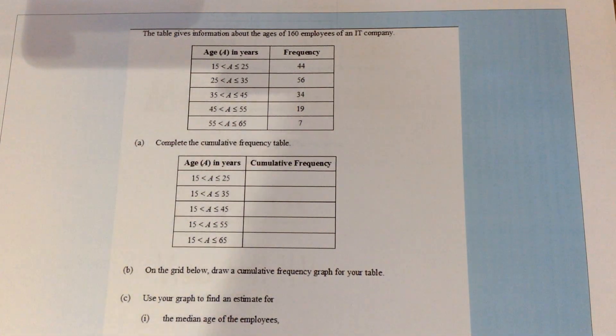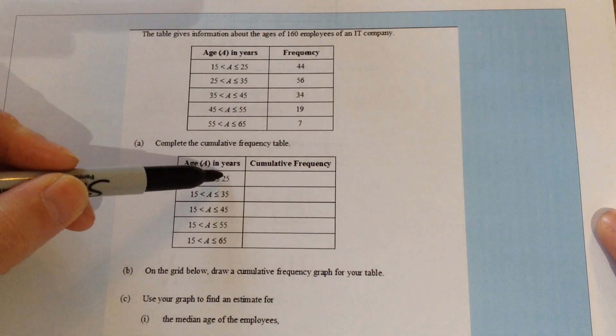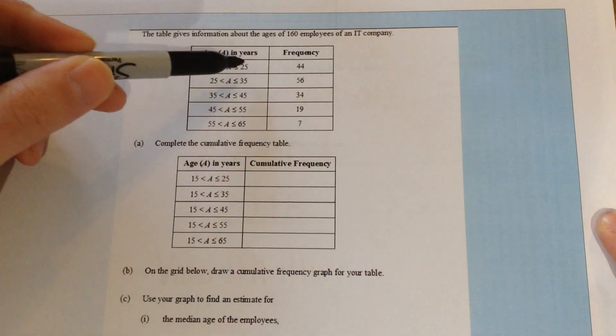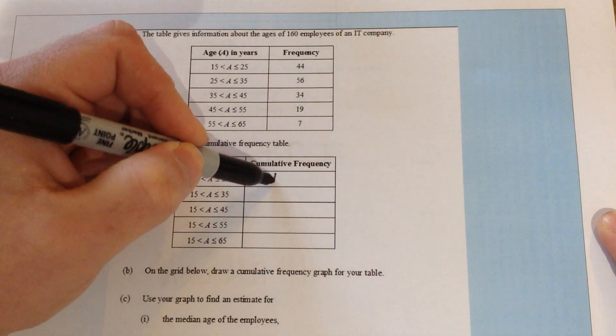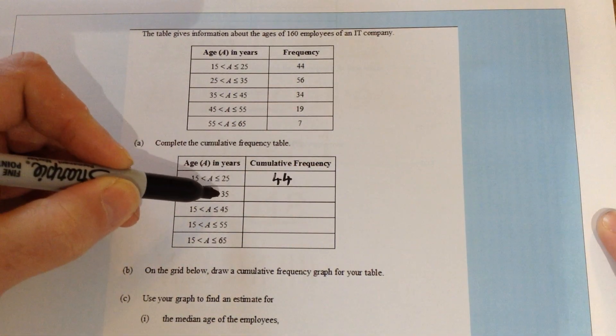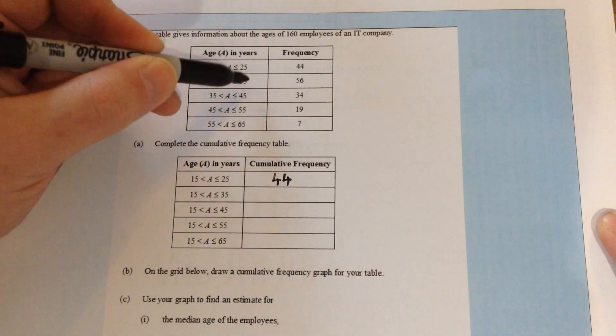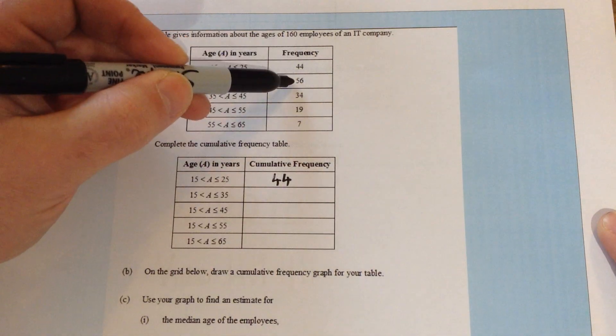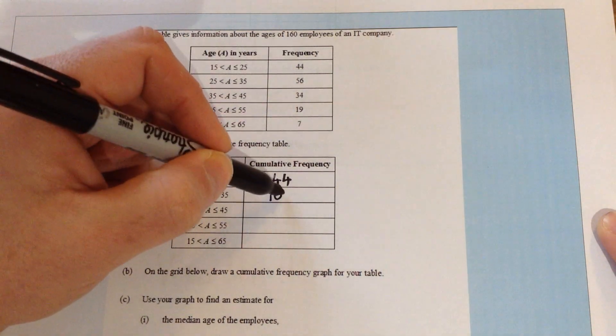The cumulative frequency is simply a running total of the frequencies in the table above. So for all the people 15 to 25, that's just a case of reading off the 15 to 25 group on the table above, so that would give us 44. The next one down, 15 to 35, would include everybody in this top group and the second group, so 44 plus 56, that will give us 100.